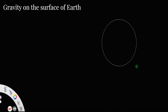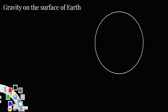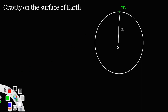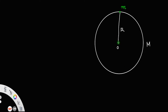Consider the earth to be a sphere of radius r. Let this be the earth, let O be its center and r be its radius. Let there be a mass m placed on its surface. Let us assume the mass of the earth to be capital M, and we know the entire mass of the earth is concentrated at its center. So there will always be a gravitational force equal to F = GMm/r² between these two masses.